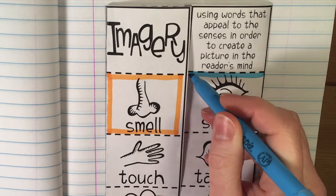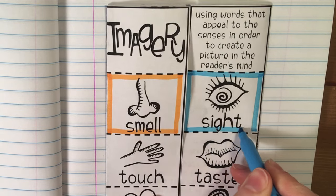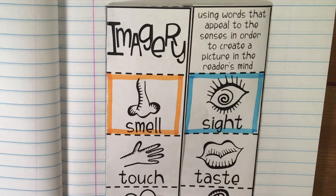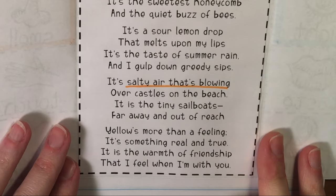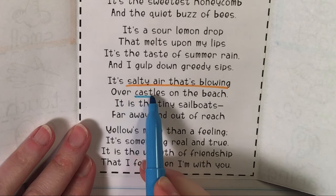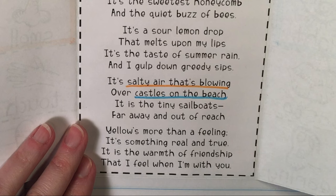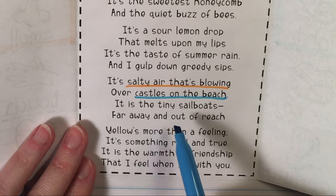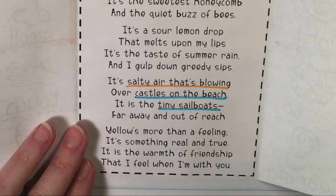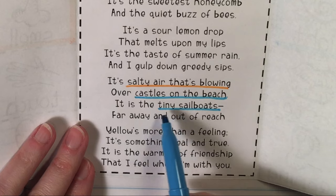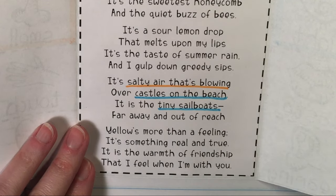The next one is sight — any words that describe what something looks like. Good adjectives describing the color, shape, or size of something are going to appeal to our sense of sight because we can actually get a picture of it in our head. Here I found a really good one: "castles on the beach." I can actually imagine a picture of sand castles all over the beach — I'm not picturing a blank, empty beach; I'm picturing big sand castles. And then I also get a sense of sight when it describes "tiny sailboats." Sailboats aren't technically tiny, but if I was on the beach looking way out in the distance, those sailboats sailing on the ocean would look very tiny to me.